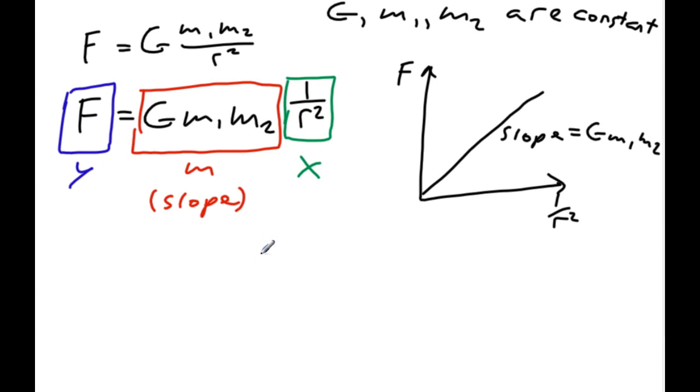So let's see, we would have to flip everything, and then take the square root, I think. Yeah, let's try that now. So let's start by flipping everything. 1 over F equals 1 over G, M1, M2, R squared. Yeah, I need to square root that. So square root, and then square root, and then there.